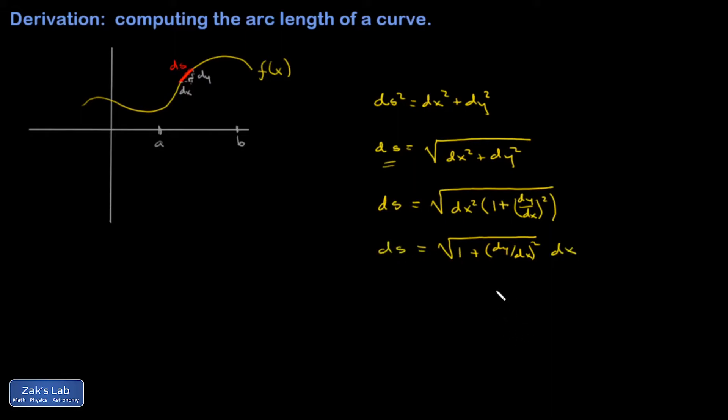All right, so now I have, if I maybe just write one more step, just switching to prime notation to make something really clear. This is entirely a function of x on the right-hand side. And then I have an infinitesimal dx attached to it. This thing is ready to integrate.